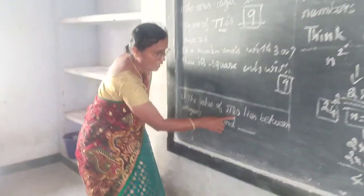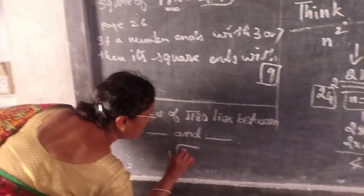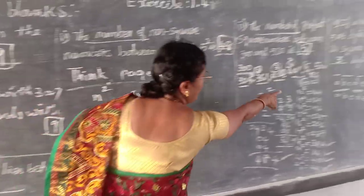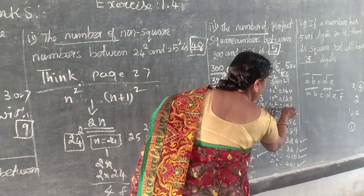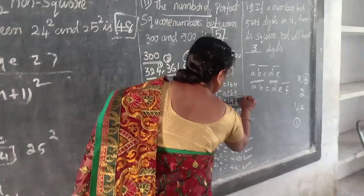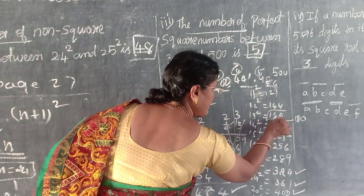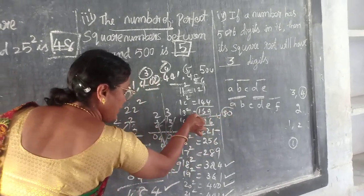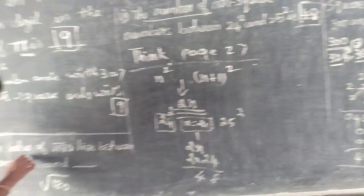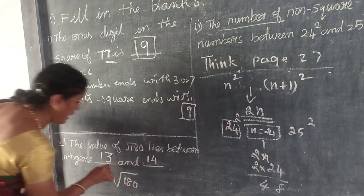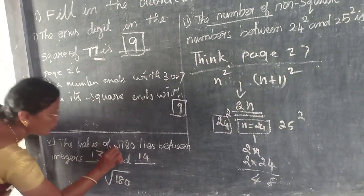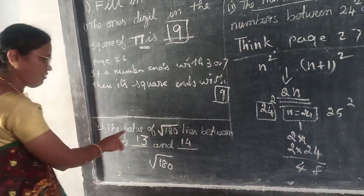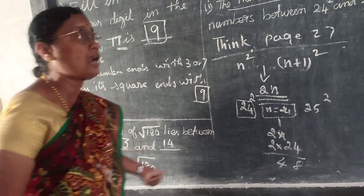The value of root 180 lies between which integers? Root 180 — see what perfect square numbers are nearby: 169 and 196. Root 169 is 13, root 196 is 14. So root 180 lies between 13 and 14. They are asking root 180, so write: the value of root 180 lies between the integers 13 and 14.